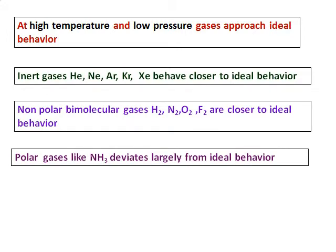Polar gases like ammonia, they deviate largely from ideal behavior. But the condition is, if I have high temperature and the pressure is low, most of the gases approach ideal behavior. I didn't say that they behave ideally, they tend to become more as an ideal gas.